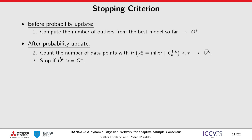We also want to use the updated probabilities to define a stopping criterion. The first step is to count how many outliers the current best model has before updating the probabilities. Then, after the update, we check how many data points have a probability below a certain threshold. We consider that points with probability below the threshold will not be sampled in the next iteration. Finally, if the number of outliers from the threshold is bigger than the number of outliers from the current model, we stop the estimation in the next iteration, because we most likely will only sample inliers.